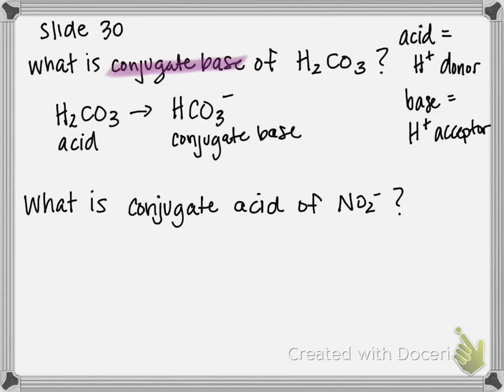For the second example, it's asking what the conjugate acid is of the NO2 minus or nitrite ion. So that means in this case, nitrite is first acting as a base.